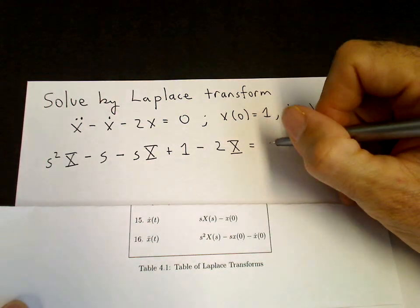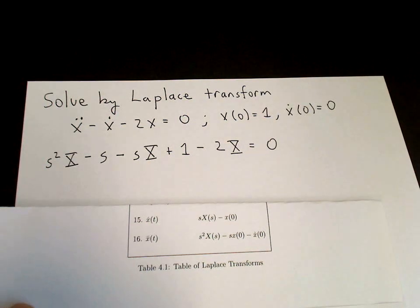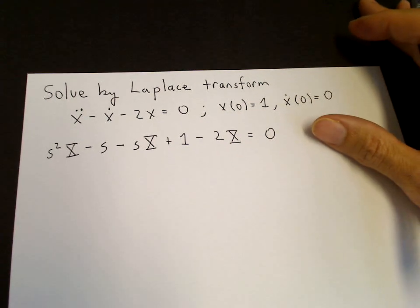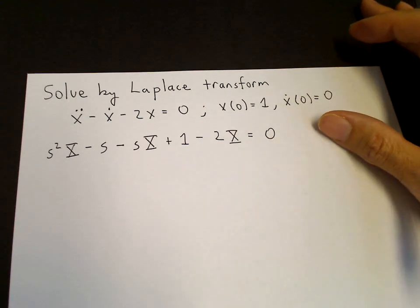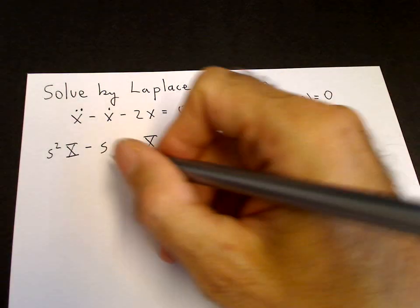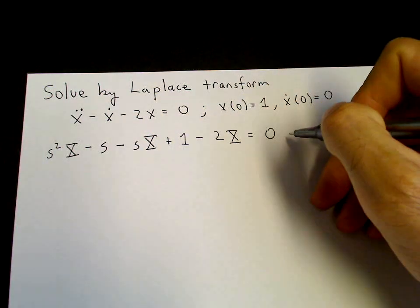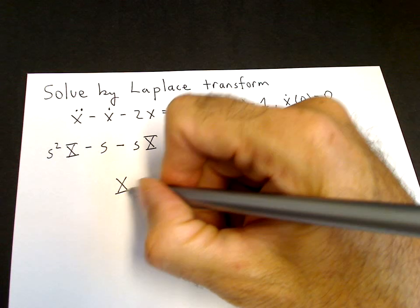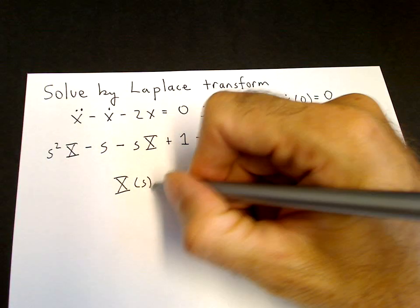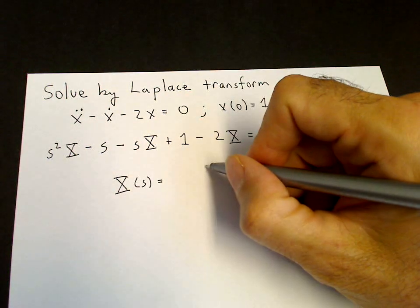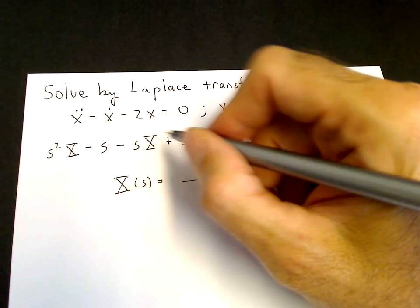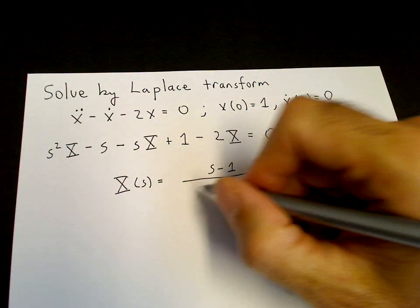And the Laplace transform of 0 is 0. So now we've converted, transformed our equation to S space, which is an algebraic equation. And we can solve for X, so we bring S minus 1 onto the right-hand side and we factor out X. So we get X of S is equal to S minus 1 over S squared minus S minus 2.